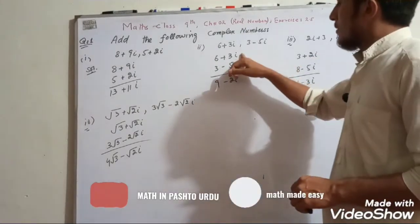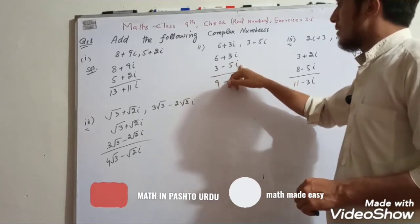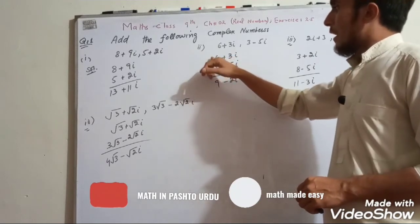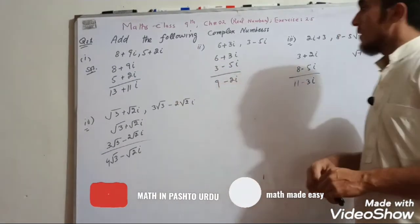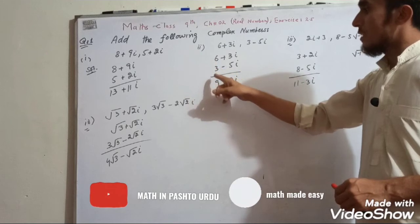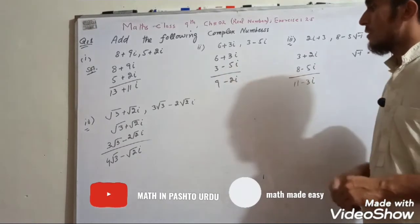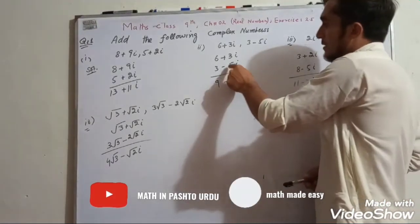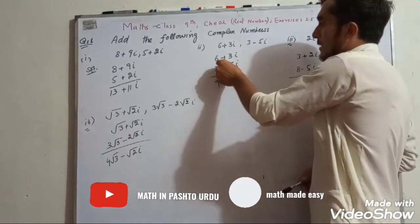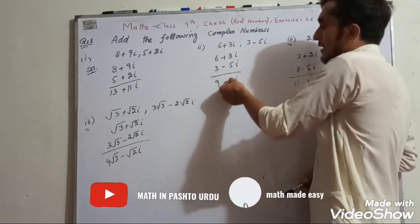We write real part with real part and imaginary part with imaginary part. So 6 plus 3 is equal to 9. Then 3 iota minus 5 iota. Here minus 5 is greater than 3, so we subtract 3 from 5 and the result is 2.